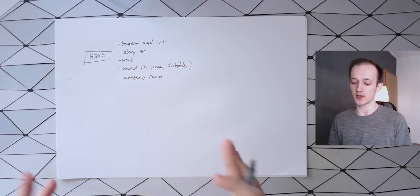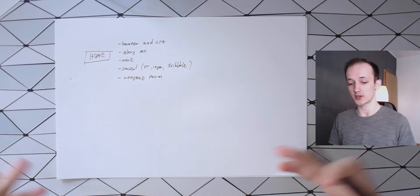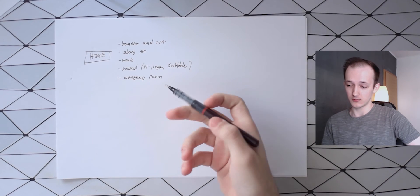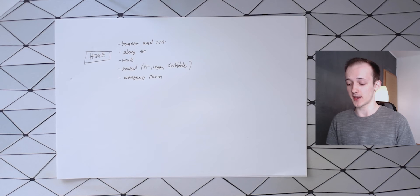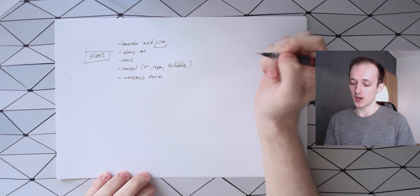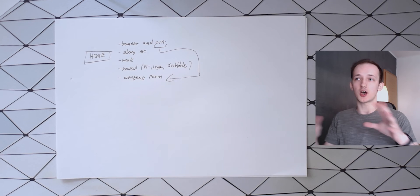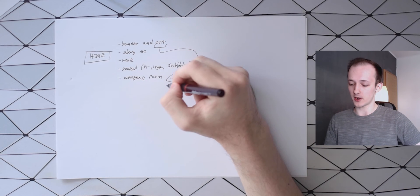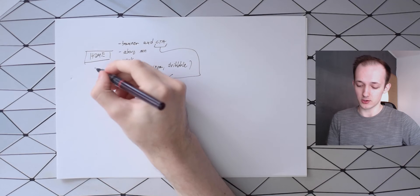Finally, the home page ends with a contact form. It doesn't need to be pretty — this sketch is just meant to organize the work. The contact form is a form where people can email me about projects or hiring. This is also the primary CTA, and the banner CTA at the top will scroll the page down directly to this contact form rather than opening a new page or pop-up.